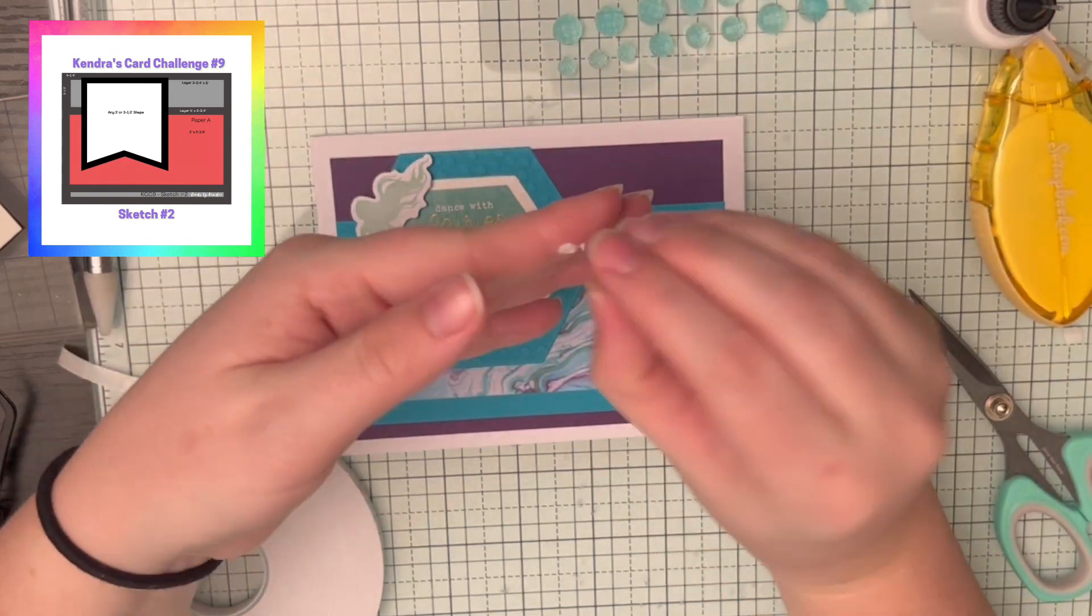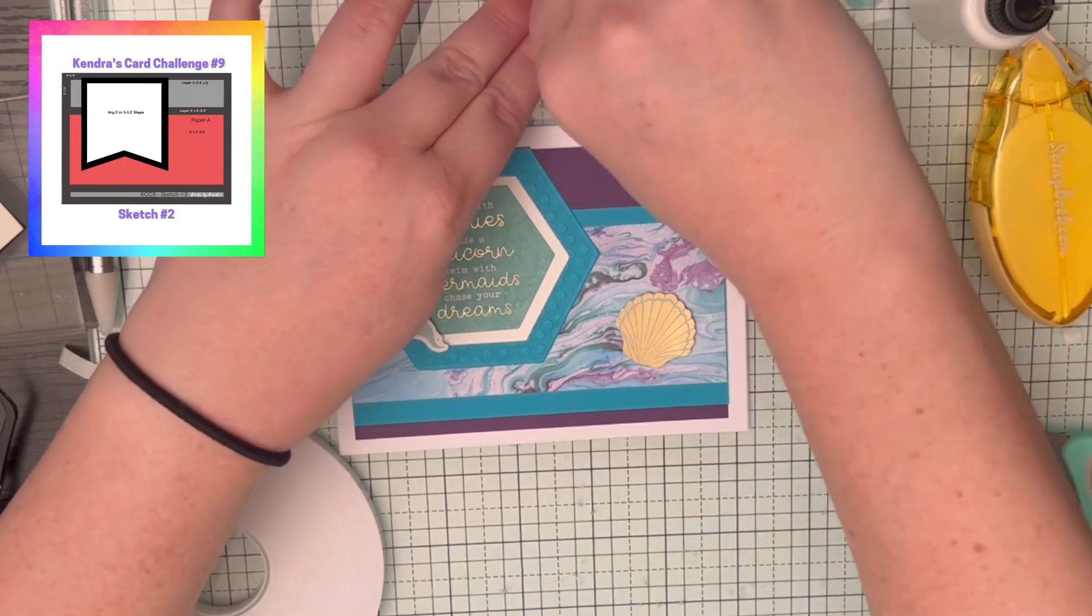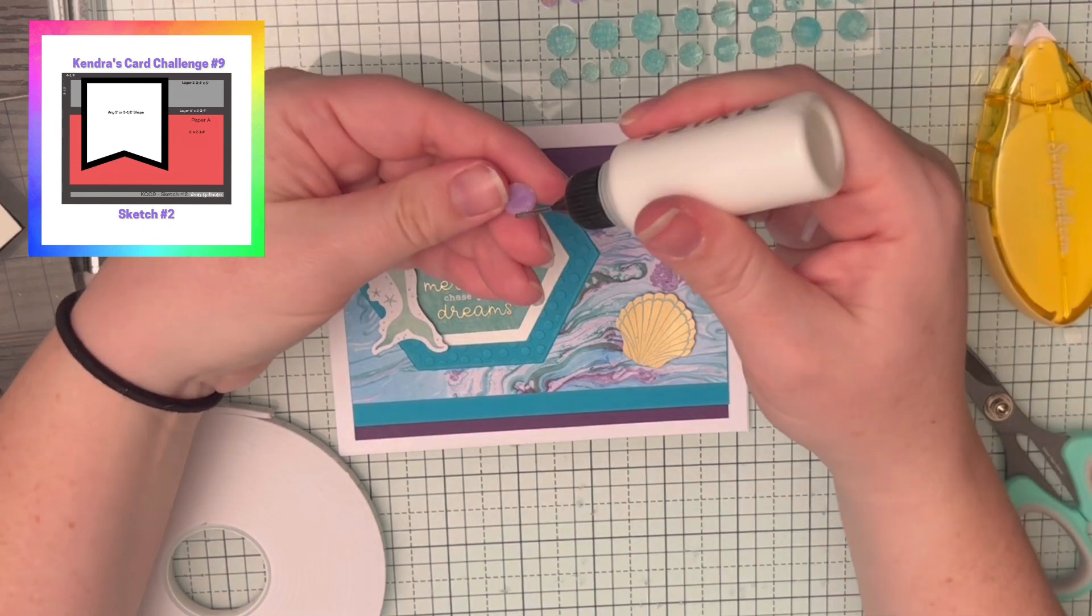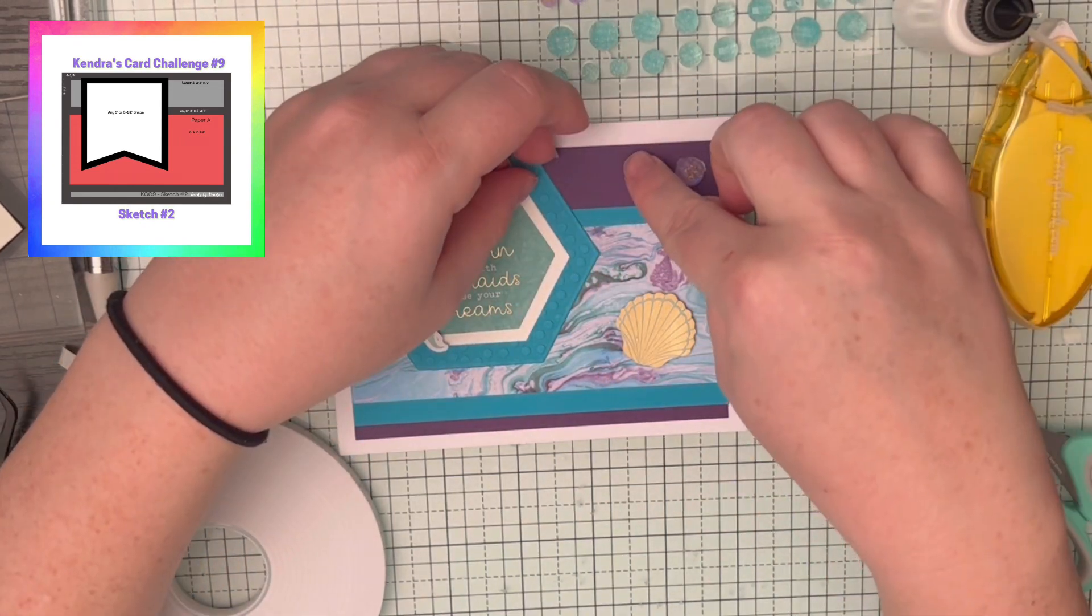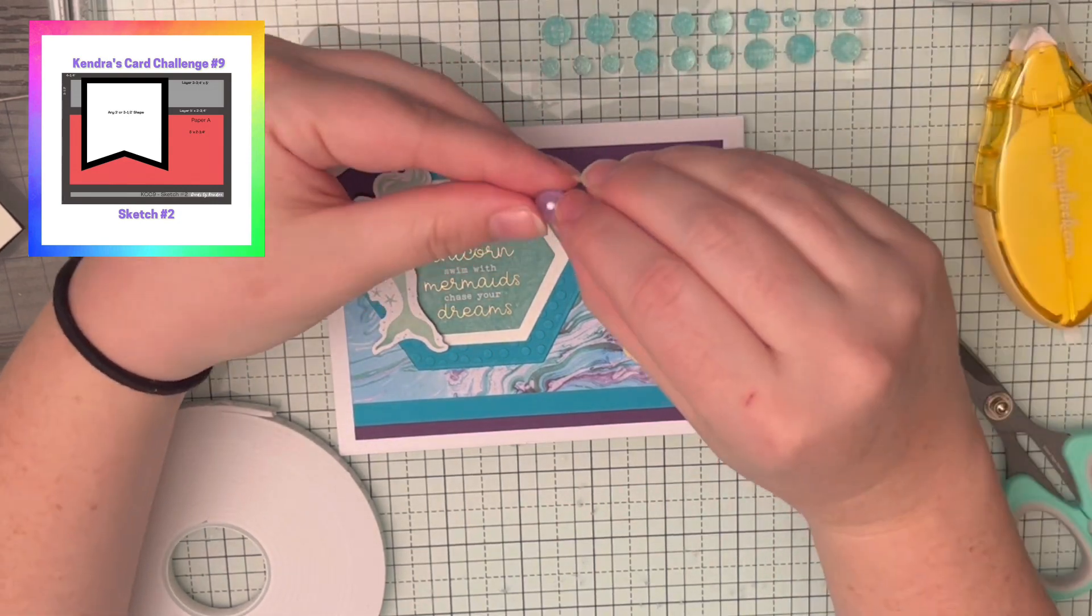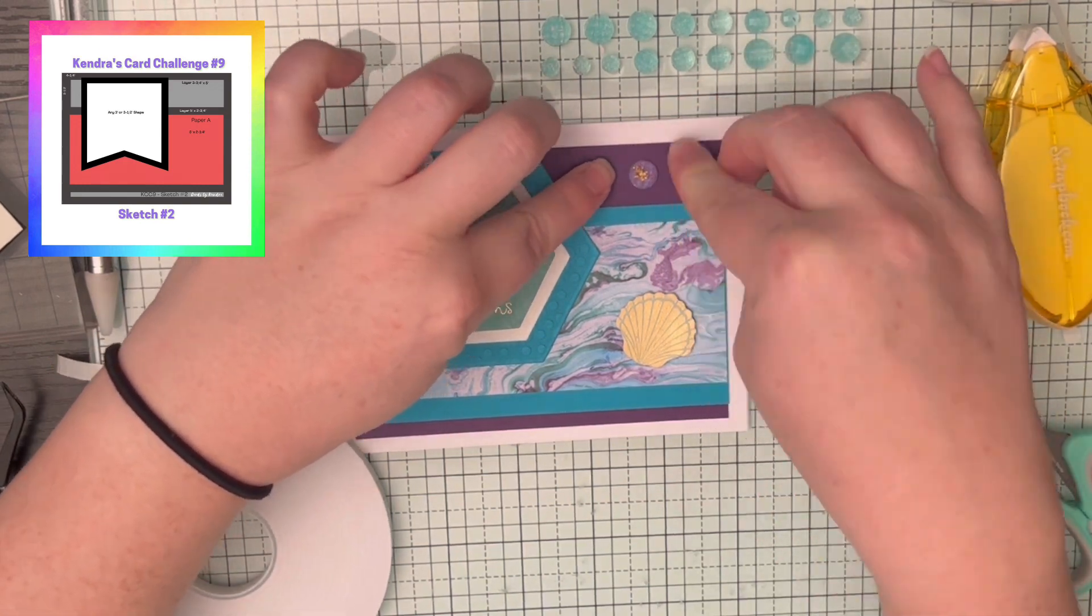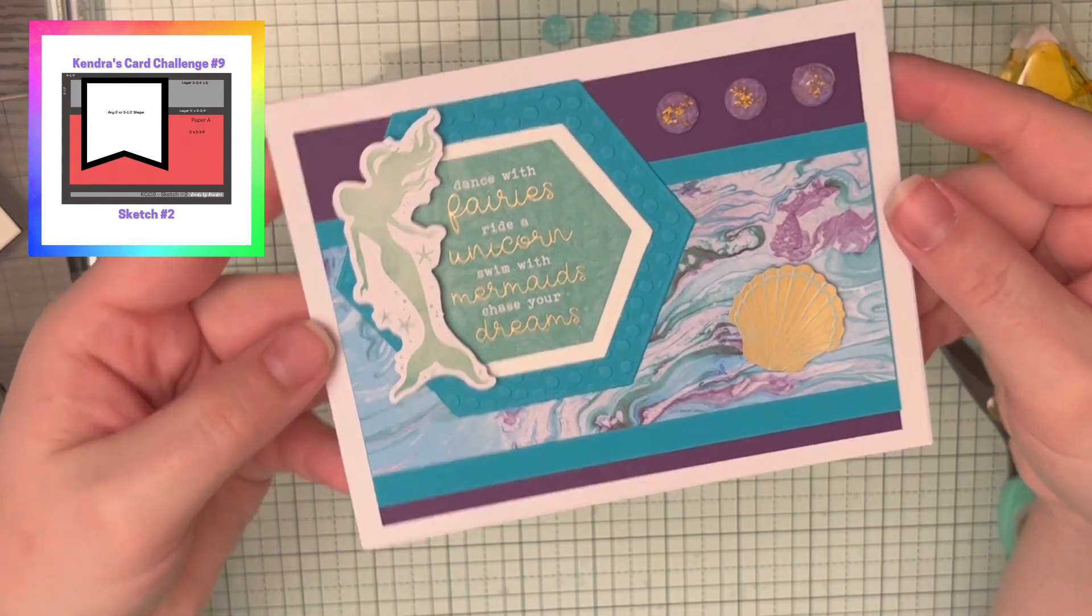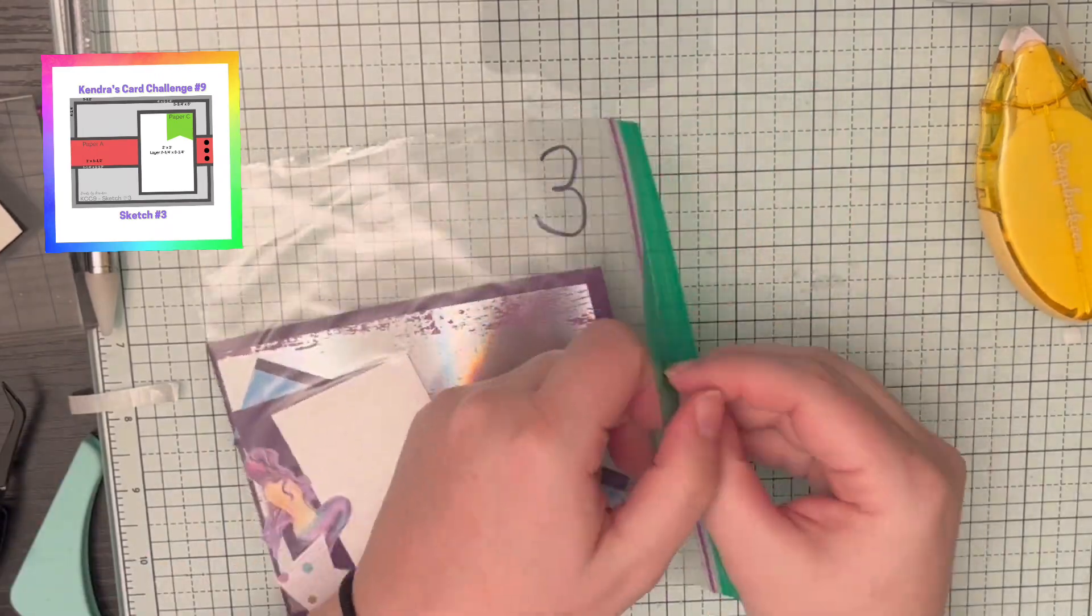And there's number two. Oh, it's so pretty. I did decide to bling it up some more. I had such a hard time with these embellishments. They have some sticky to them, but they tend to fall off or I get them stuck to my finger, as you can see. So I need to put a little bit of glue on them just for extra stick and then I struggle to get them off my fingers. All right. And that is card number two. Dance with fairies, ride a unicorn. I love it.